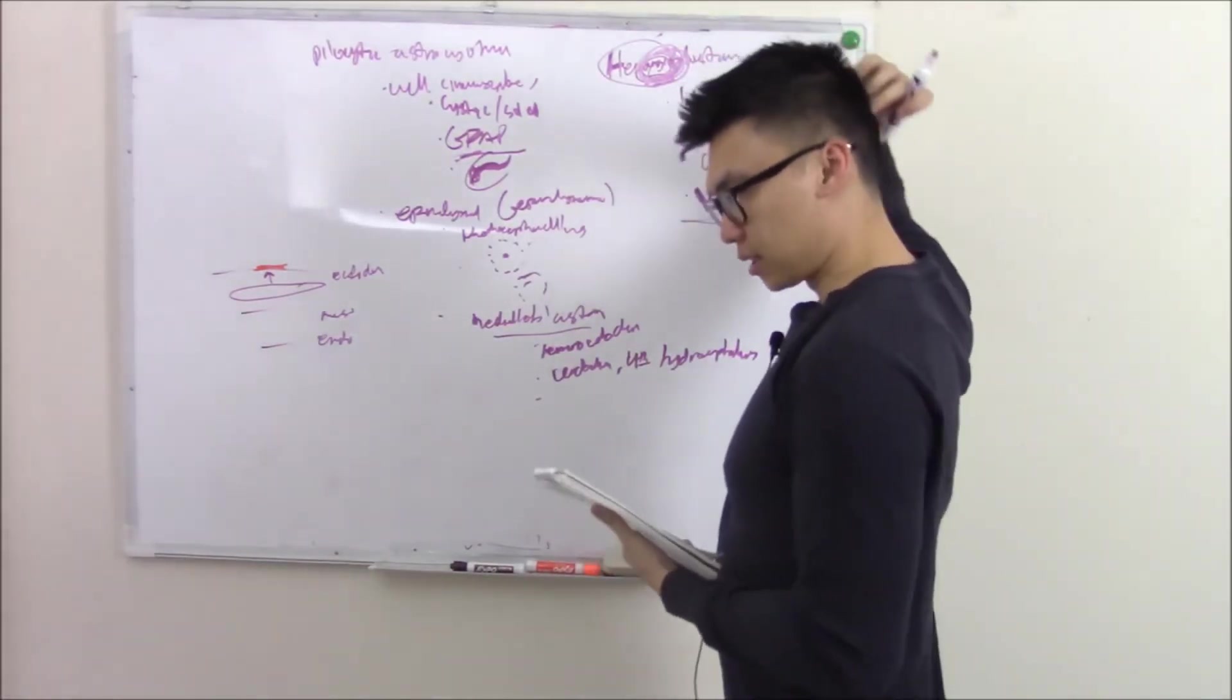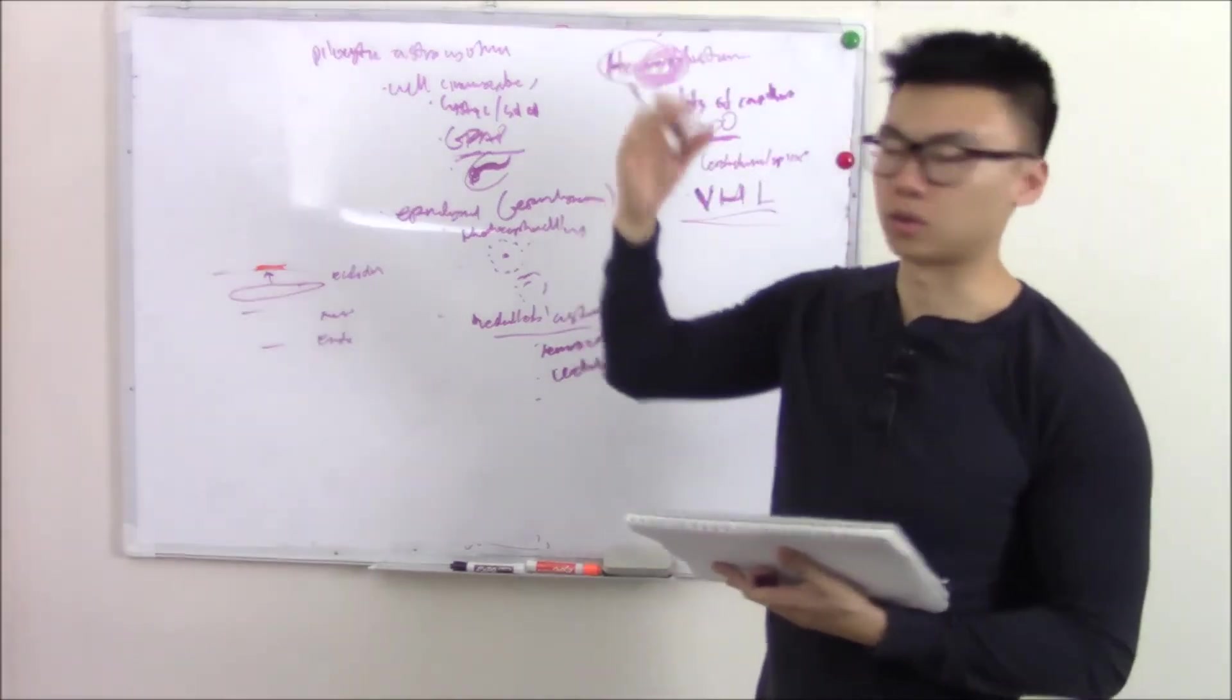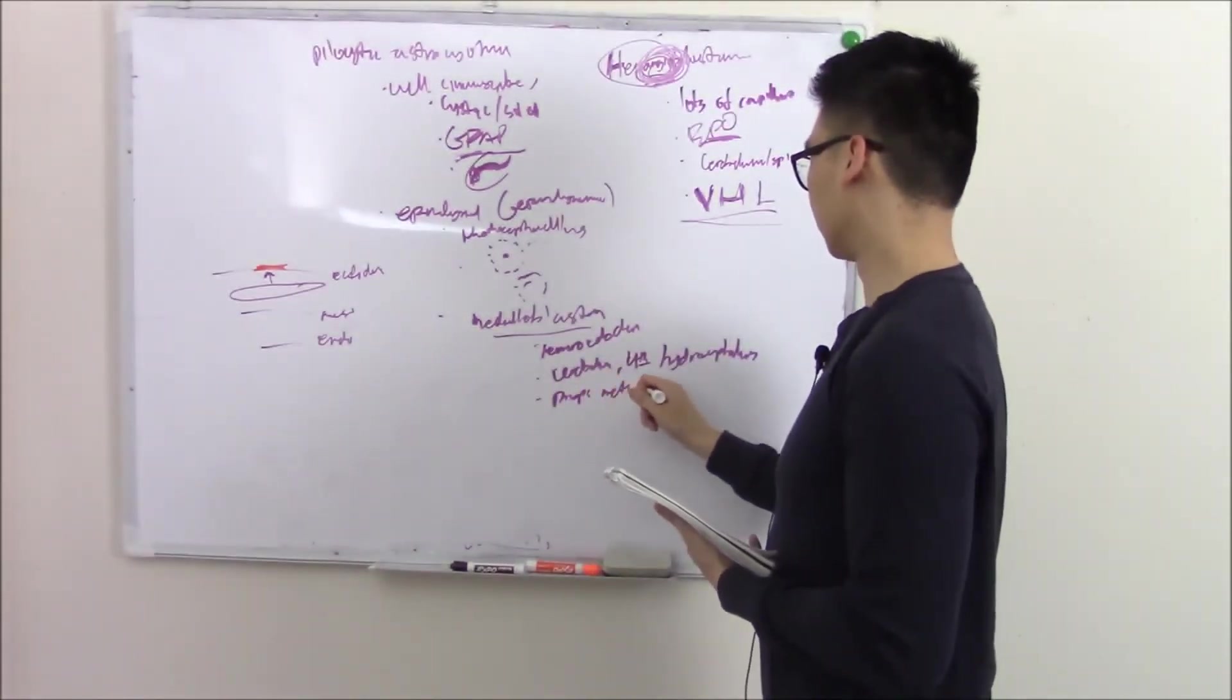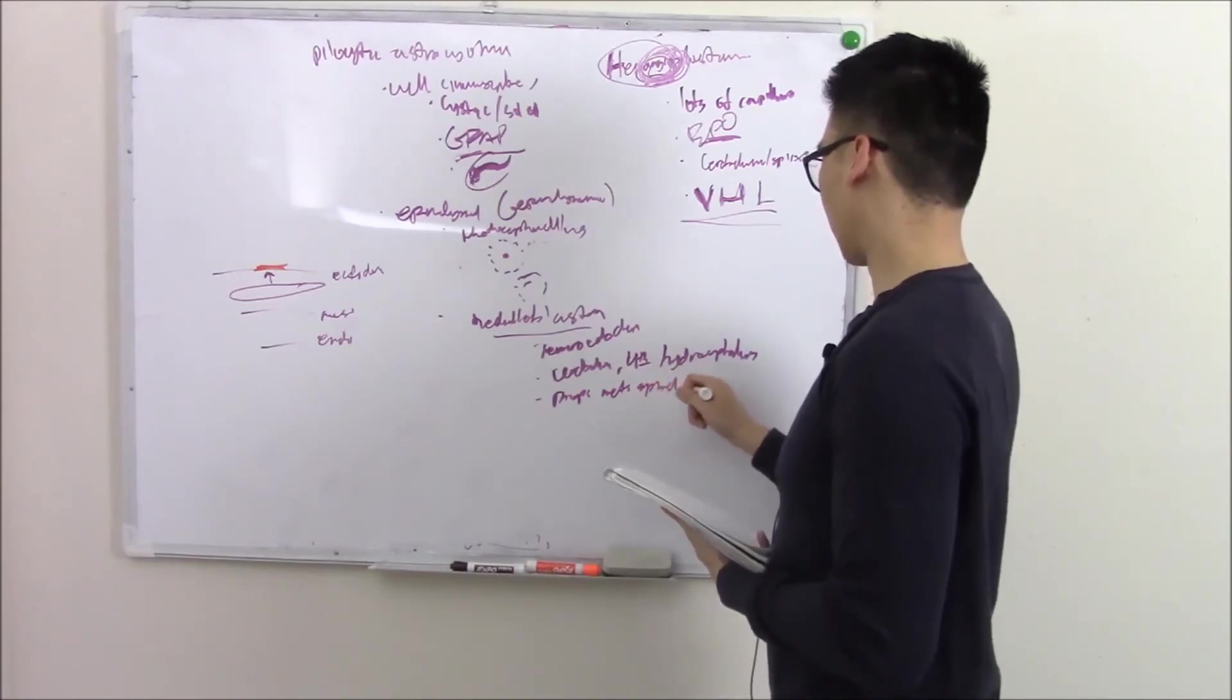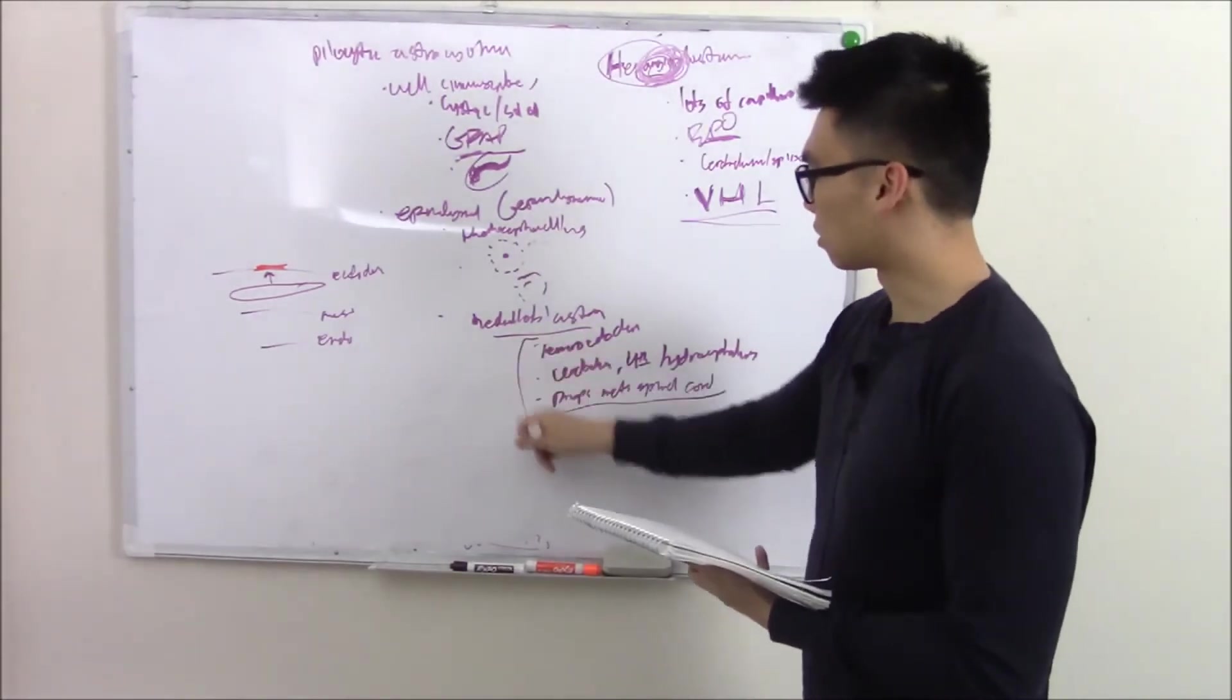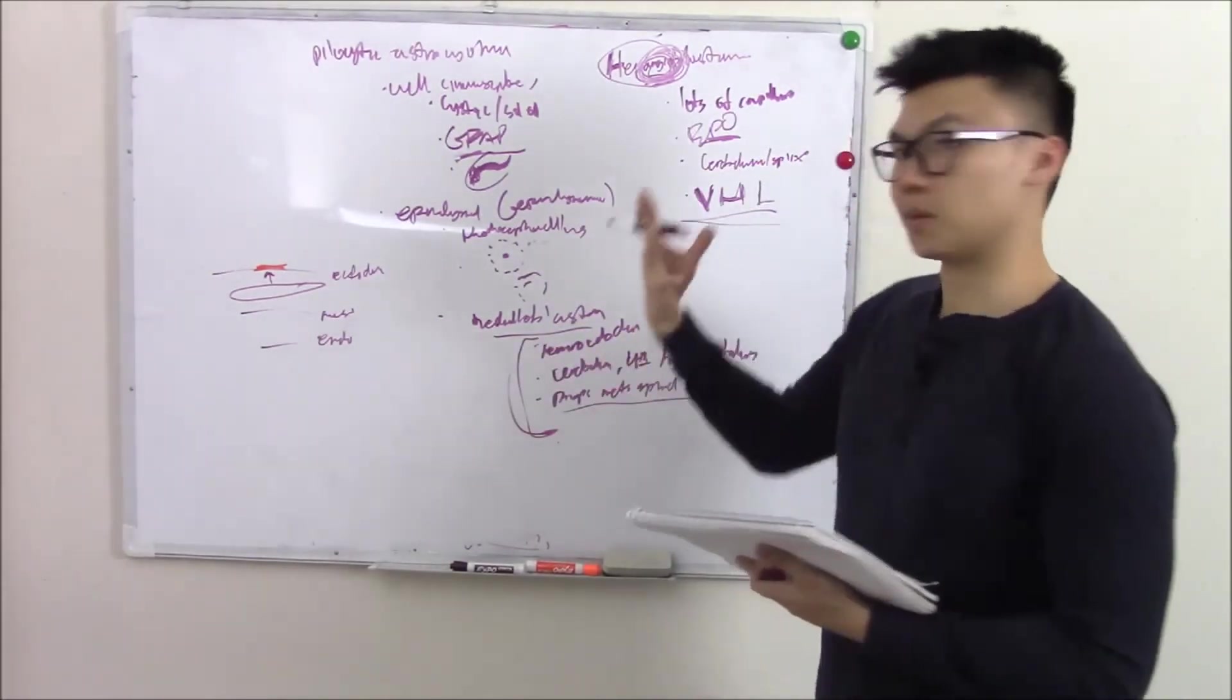If that's not enough, it likes to drop metastasis down that area, so down your spinal cord. Drop mets down the spinal cord. You can imagine the prognosis of this is not the most favorable. That's what it looks like grossly. You can see the drop mets on MRI. You can see the cerebellar lesion.